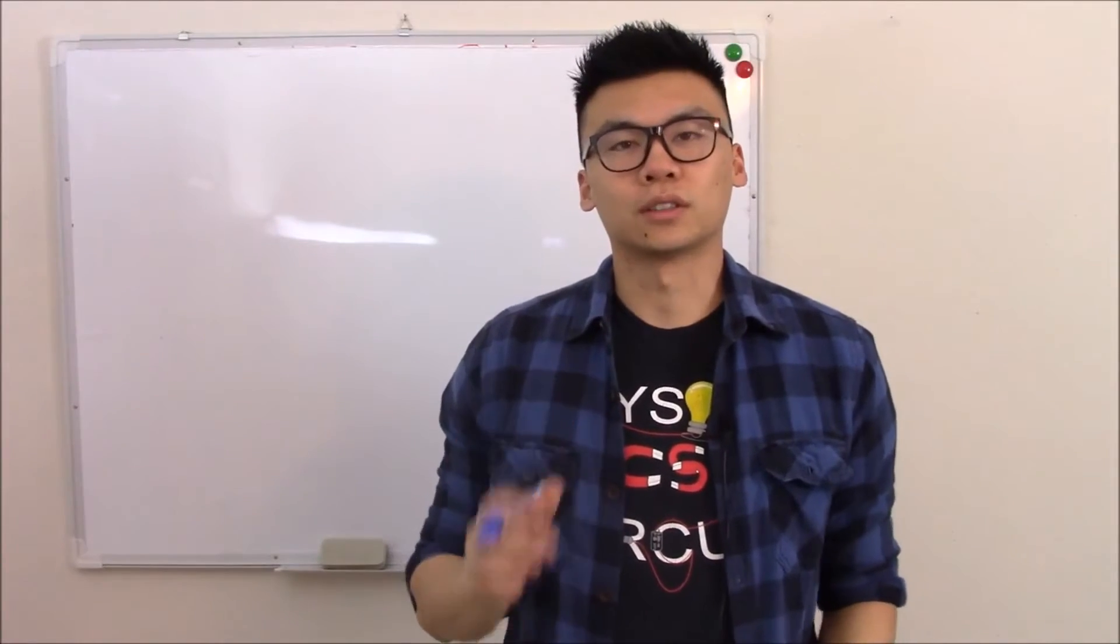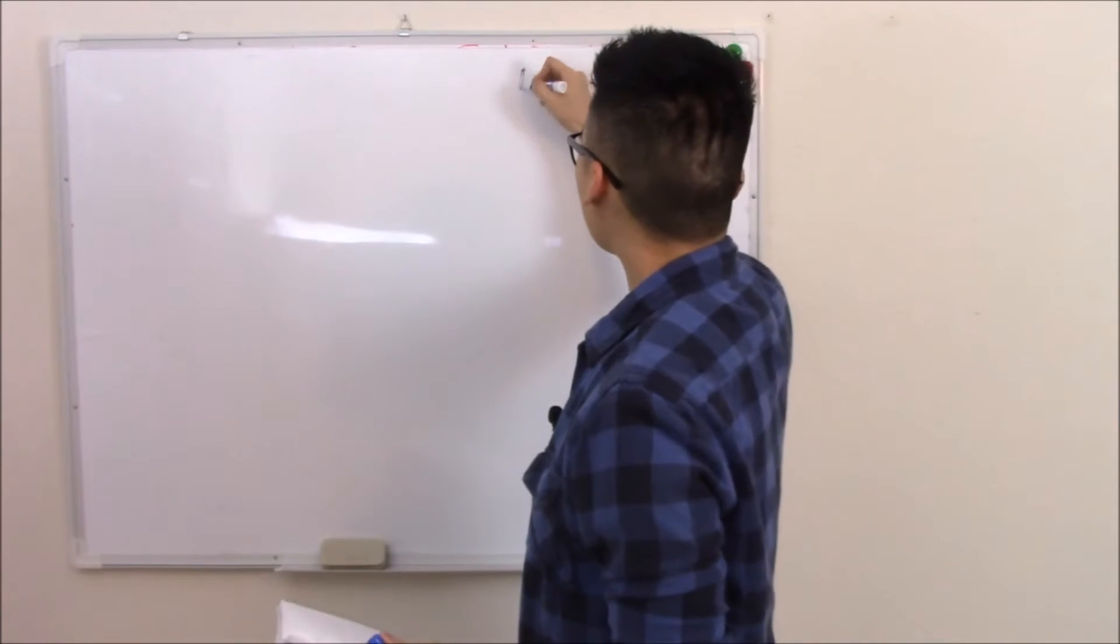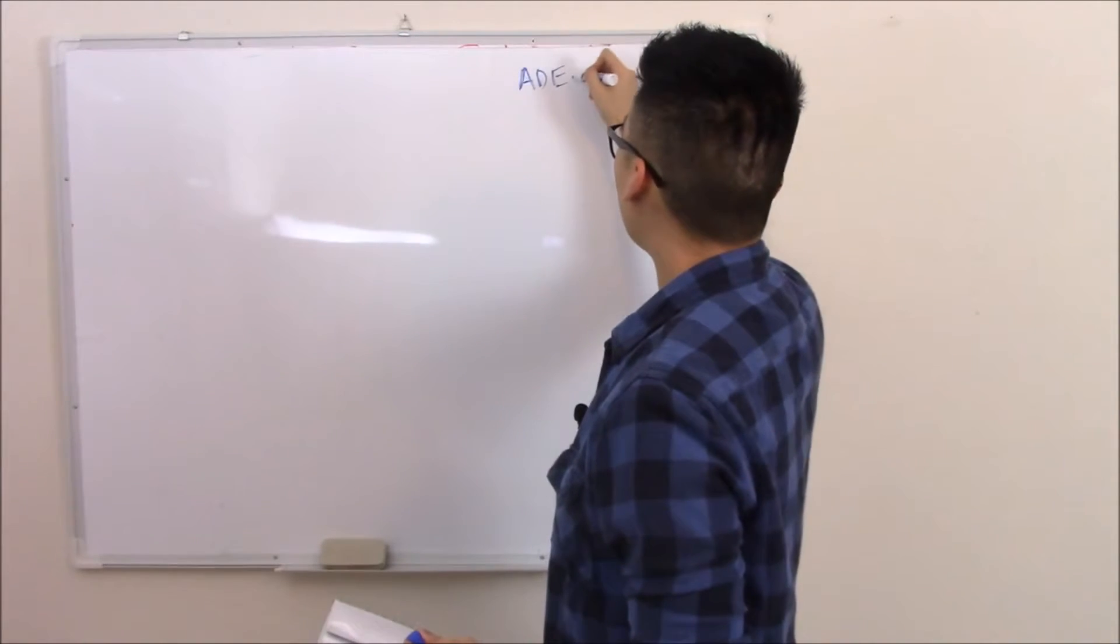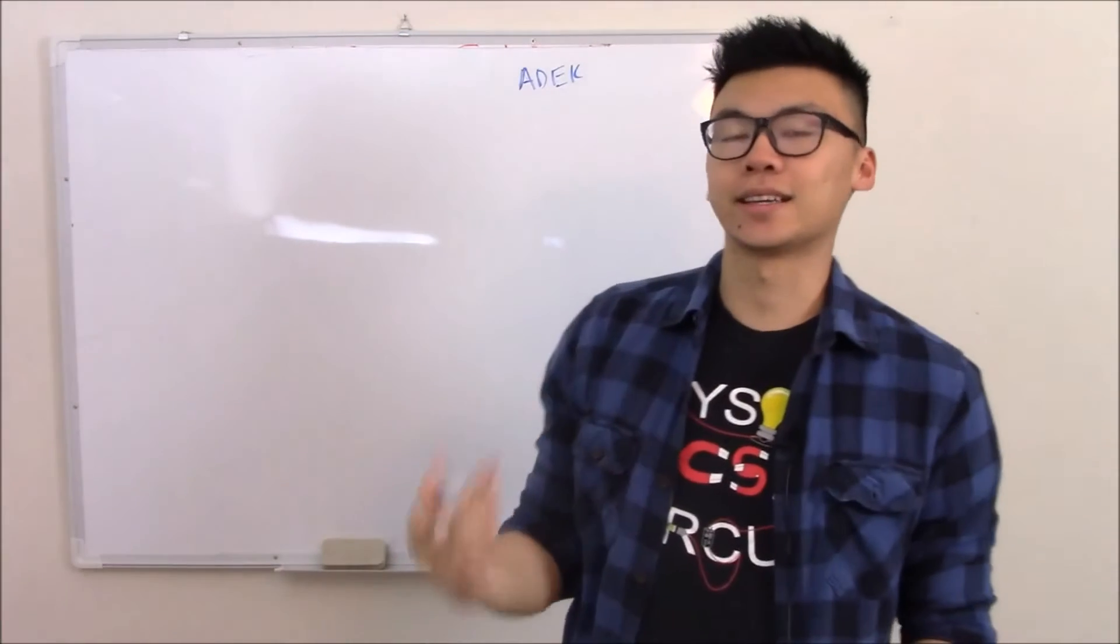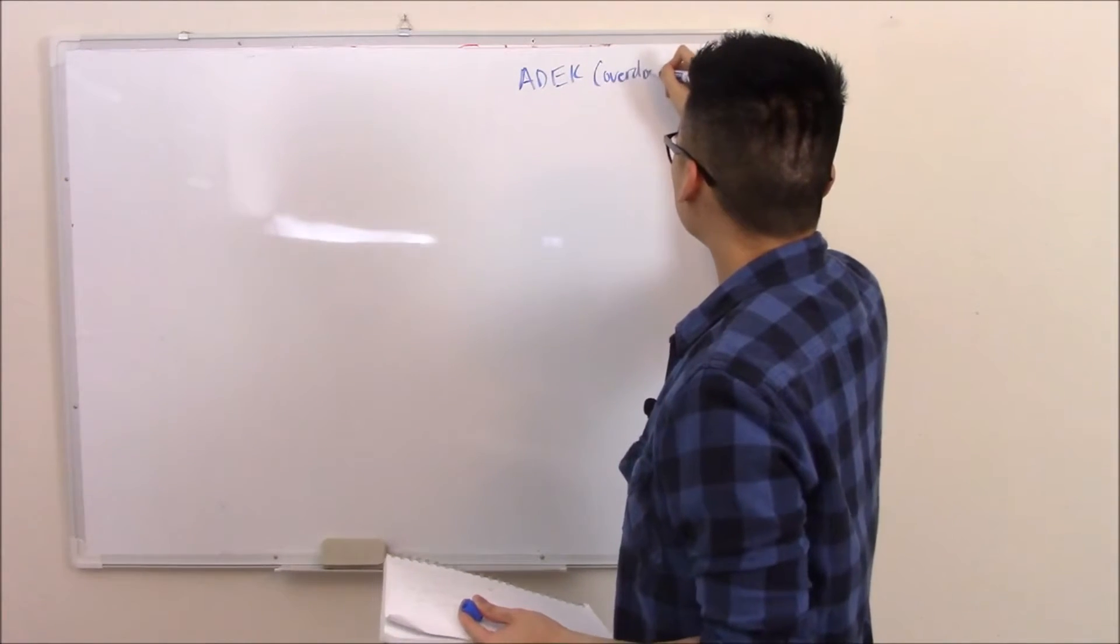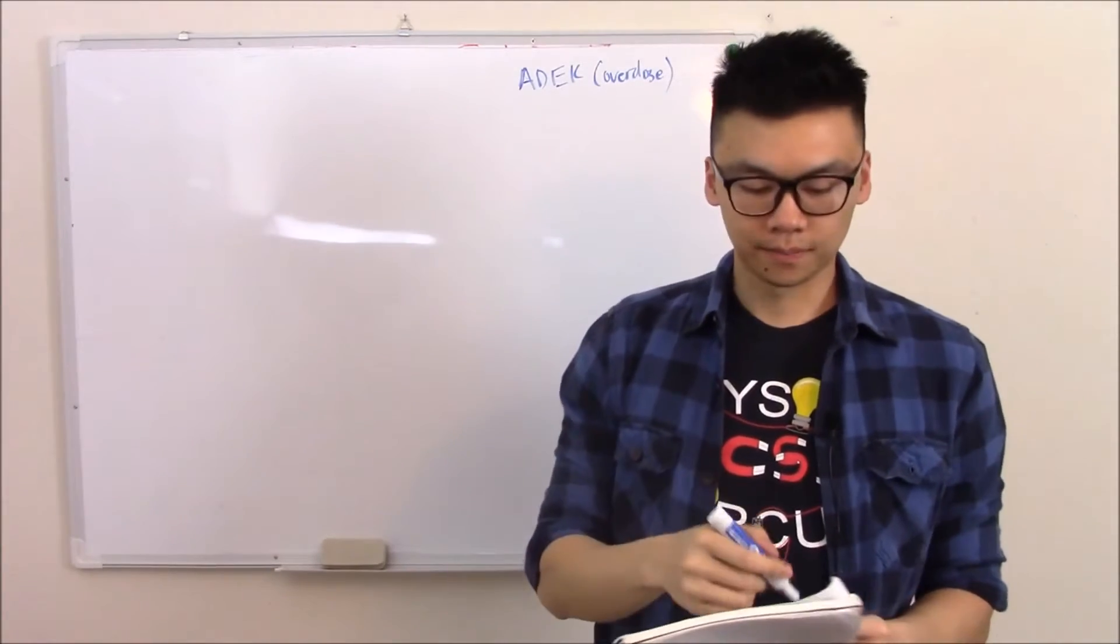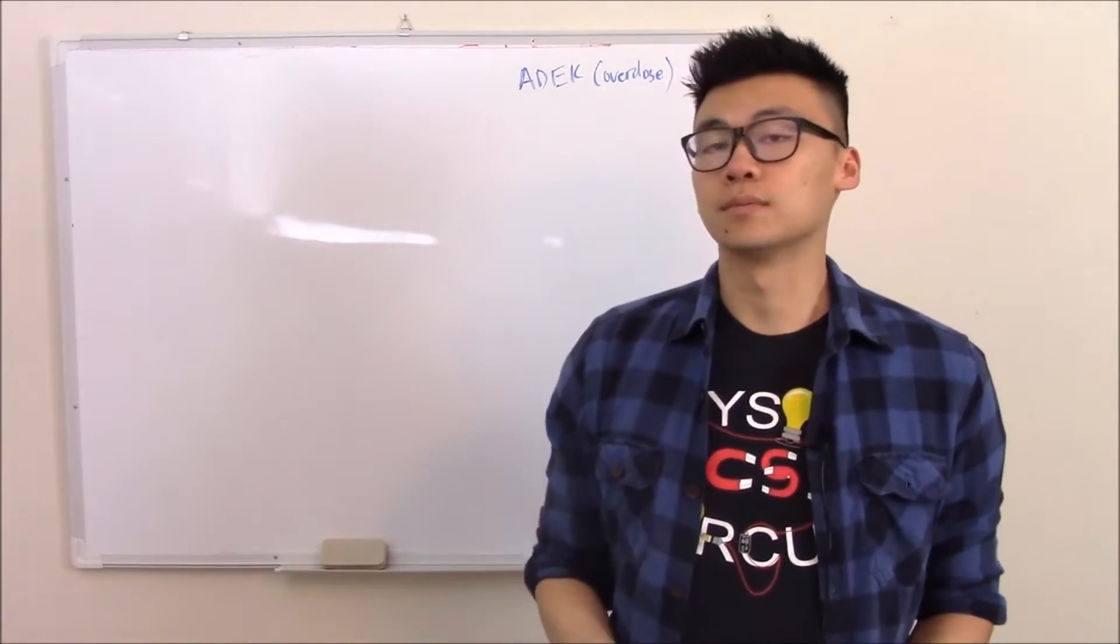This video is going to be all about your fat-soluble vitamins. Those are your vitamin A, D, E, and K, or ADEK. Fat-soluble vitamins aren't readily peed out, they're stored more in your fat and your liver. Because of that, overdose is more common.